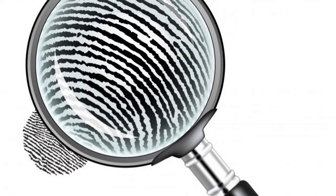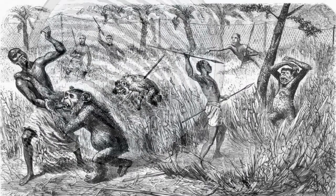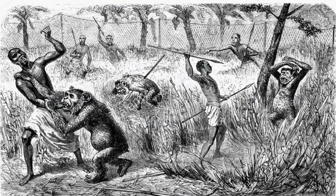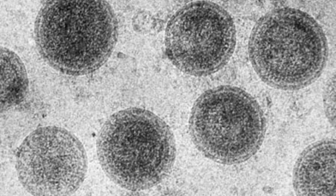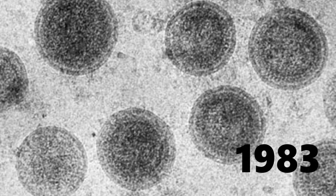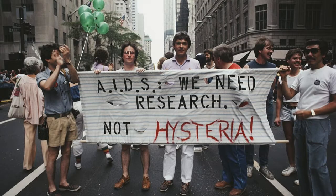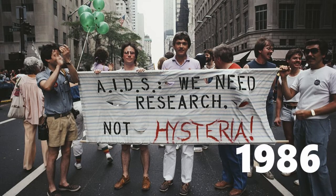Records say that HIV came into human life from apes in the 90s, possibly transmitted through an open wound to a hunter during hunting. It was identified and named as HIV in 1983 and announced to the public in 1986.